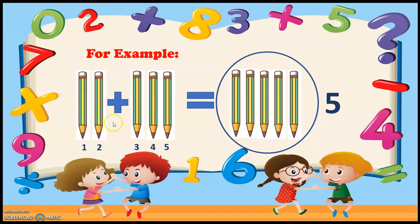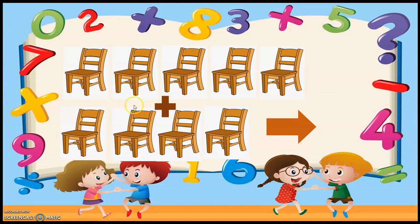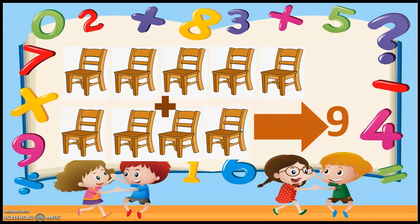Next example: I have different chairs. This plus sign is showing me that I have to add them. Let me count — one, two, three, four, five — five chairs. How many more chairs? Six, seven, eight, nine. So there are total nine chairs. The sum of five and four chairs is nine.